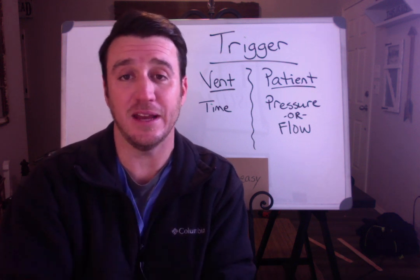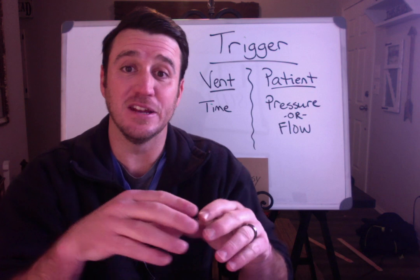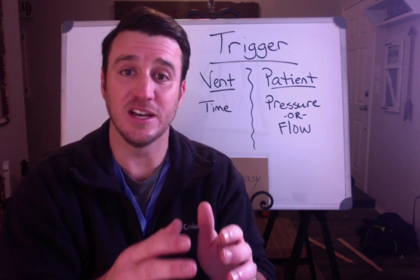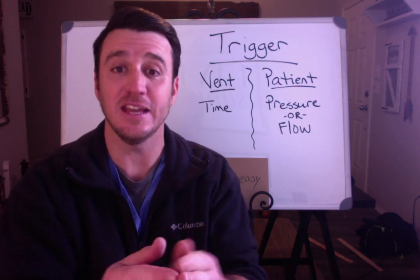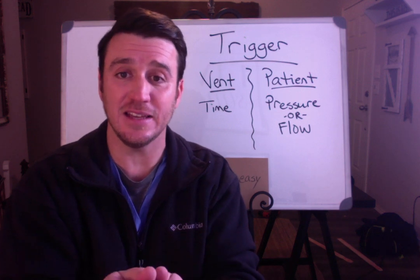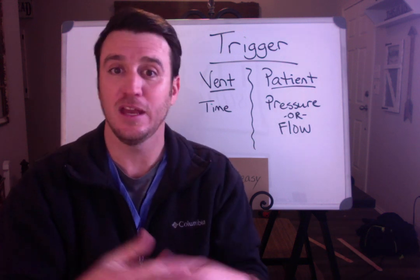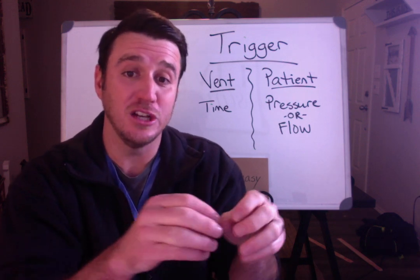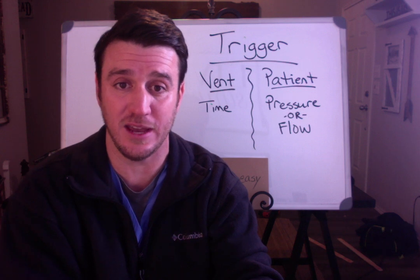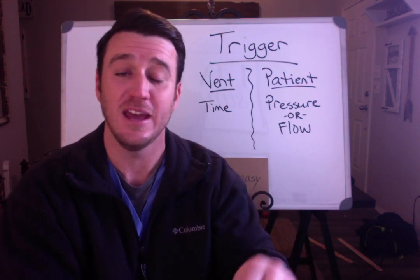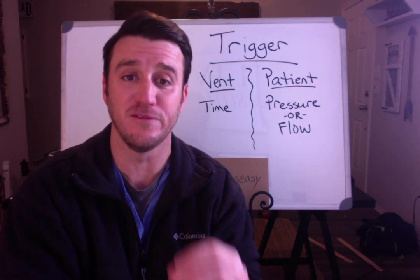Now if you're in assist control and the patient initiates a breath, the vent gives that breath because the patient initiated it, but it still sees it as a machine breath because it's delivering a set tidal volume and set flow in volume AC, or a set pressure at a set inspiratory time in pressure control AC. In that case, the vent is still operating off of time. If you're on a rate of 12, it's going to give a time-triggered breath every five seconds — 60 divided by 12 is five seconds.